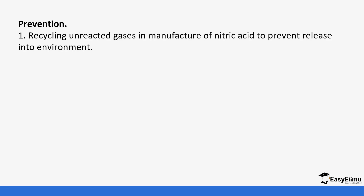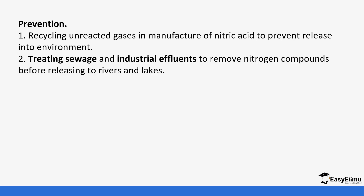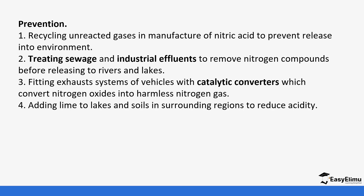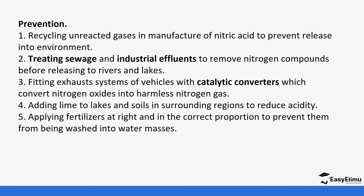To prevent these effects: recycle unreacted gases in the manufacture of nitric acid to prevent them being released into the atmosphere. Treat sewage and industrial effluents to remove nitrogen compounds before releasing them into rivers. Fit exhaust systems with catalytic converters to convert nitrogen oxides into harmless nitrogen. Add lime to lakes and soils to reduce acidity. Apply fertilizer in the correct proportions to prevent it from being washed away.